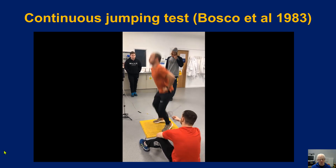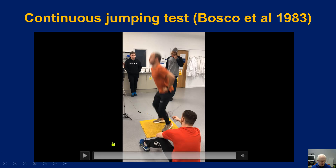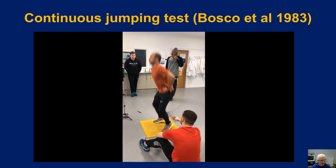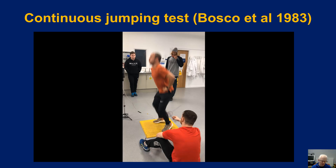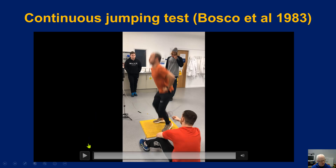Now focus on the person sitting on the ground — notice he's holding what is called a goniometer, positioned at 90 degrees. What we're looking for, as specified by Bosco, is that the 90-degree knee angle must be achieved for each jump. Let's watch again and focus on the 90-degree knee angle.